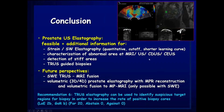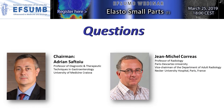In conclusion, prostate ultrasound elastography is feasible and provides additional information for both strain and shear wave elastography. Shear wave elastography additionally provides true quantitative measurements, helping to characterize abnormal areas and detect stiffer areas. The future perspective is combination of MRI and transrectal shear wave elastography fusion, precisely identifying stiffer areas combined with MRI information. Transrectal elastography can be used as the key recommendation to identify suspicious target regions for biopsy, in order to increase the positive detection rate of prostate cancer.